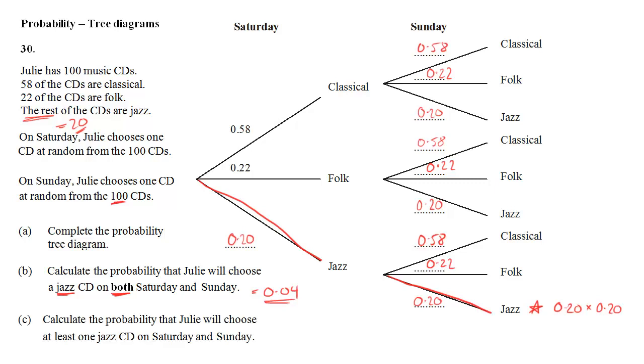Part C: the probability that she will choose at least one jazz CD on Saturday and Sunday. So that means it doesn't matter whether she's got two jazz CDs or just one, we want those outcomes. These ones with blue stars all correspond to getting jazz on the first day, so they all count. We could do those three branches individually but the whole of that first branch on Saturday counts. So we just include 0.20. We don't need to multiply along the branches at all.